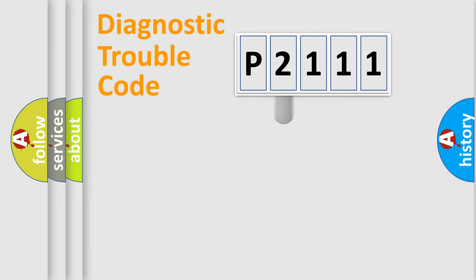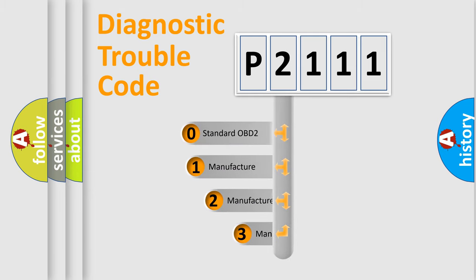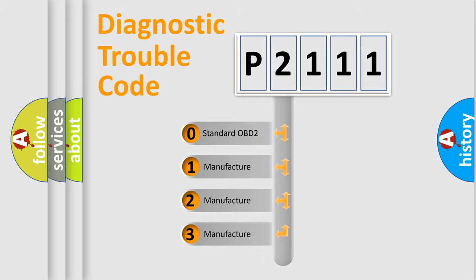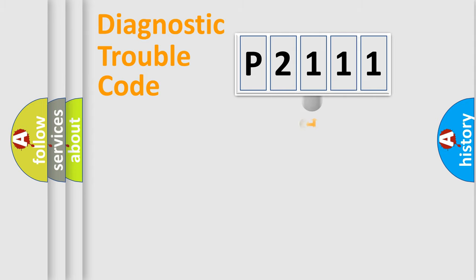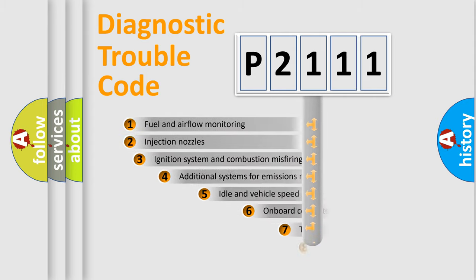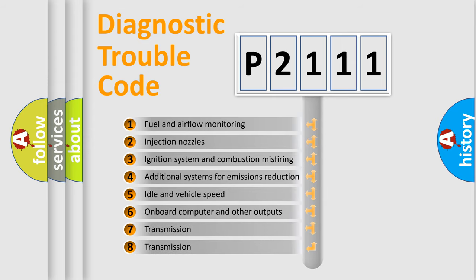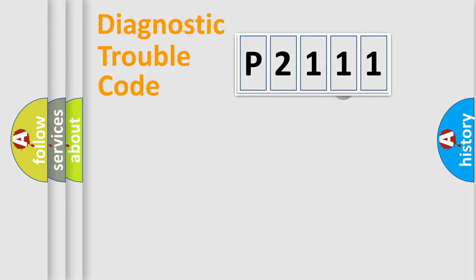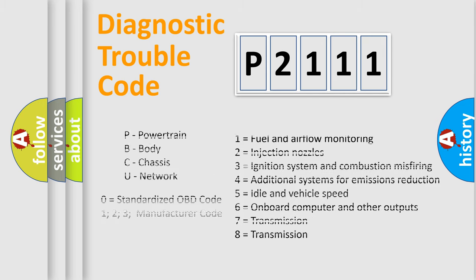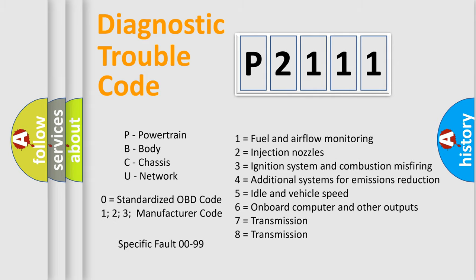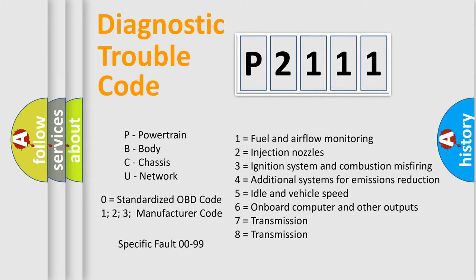This distribution is defined in the first character of the code. If the second character is expressed as zero, it is a standardized error. In the case of numbers 1, 2, or 3, it is a manufacturer-specific error expression. The third character specifies a subset of errors. This distribution is valid only for the standardized DTC code, and only the last two characters define the specific fault of the group.